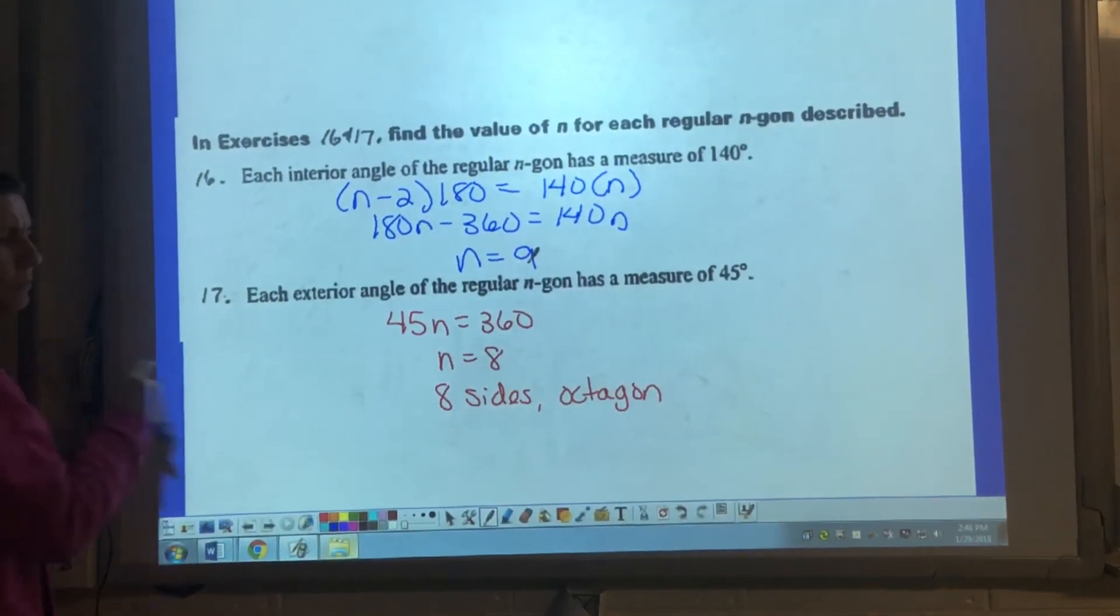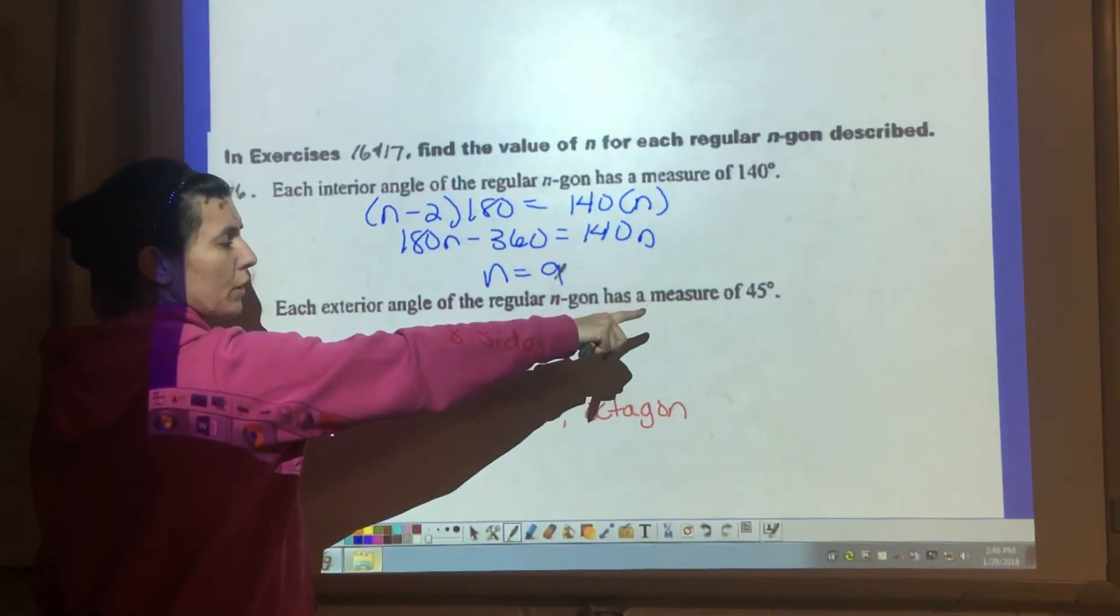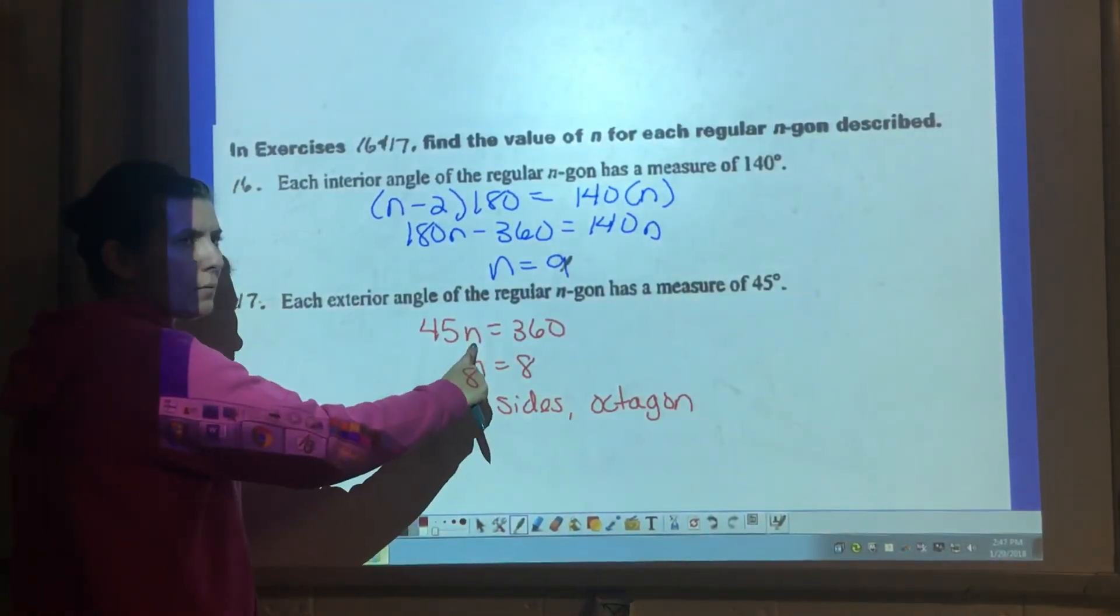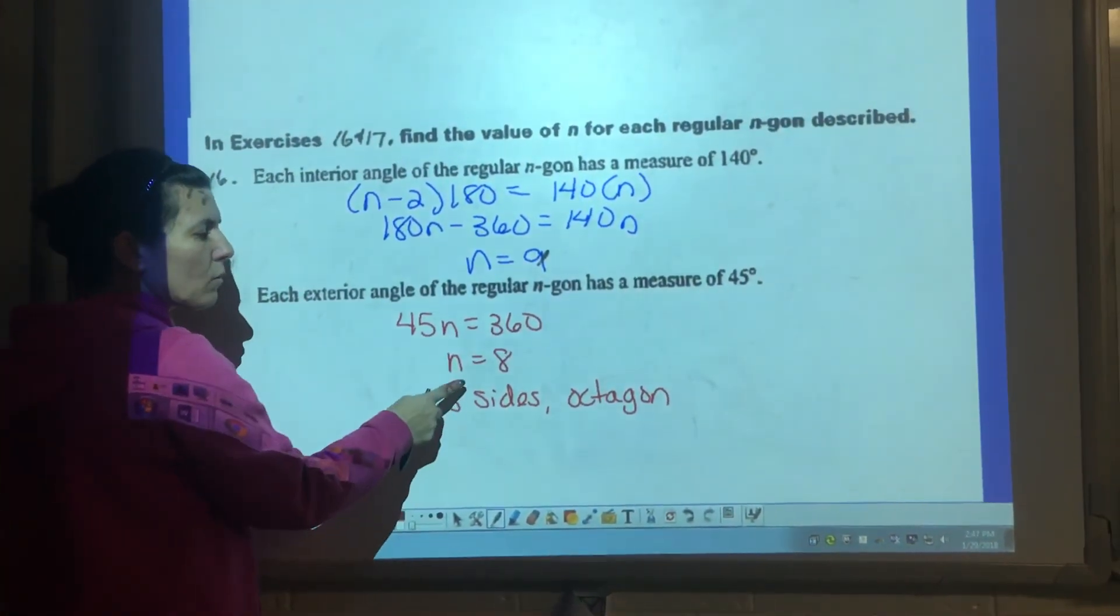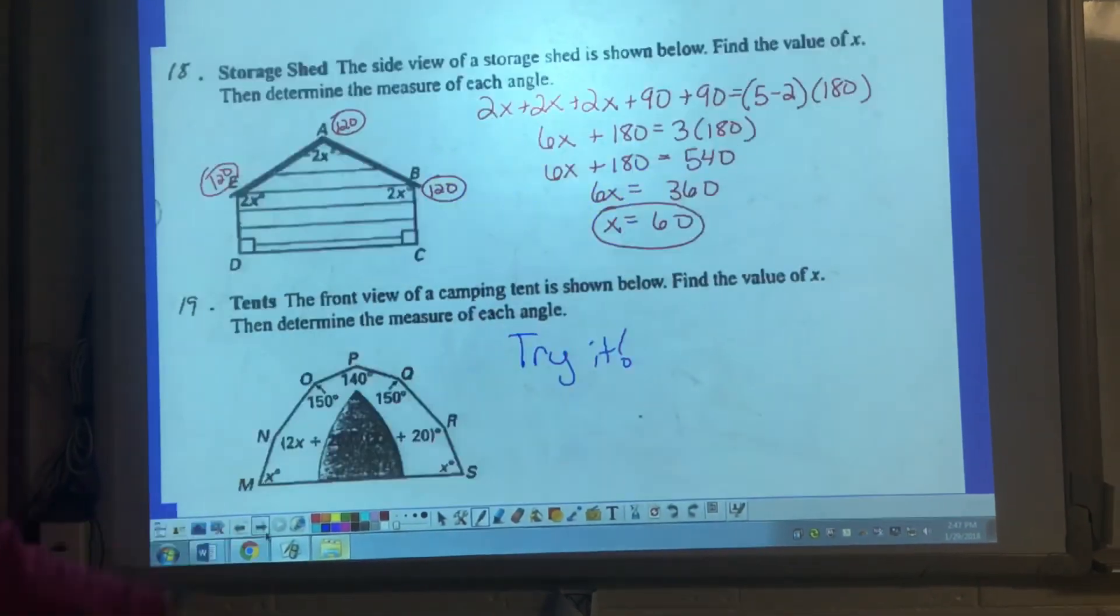Similar idea, exterior angle. So we know that each exterior angle is 45 degrees. We don't know how many angles there are, but we know their sum is 360. We're working backwards, so we know that that is an octagon.